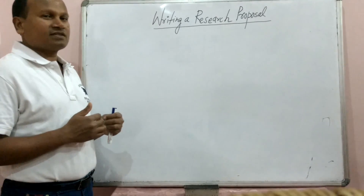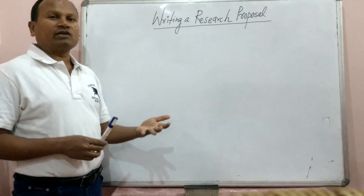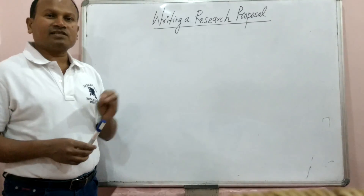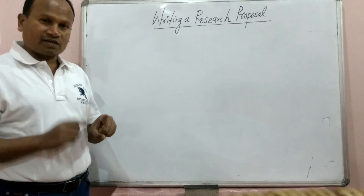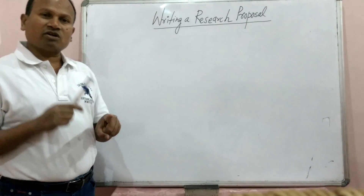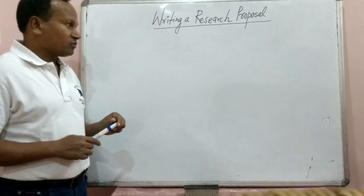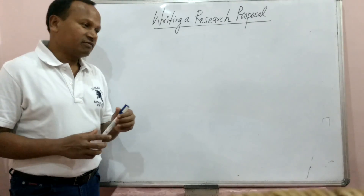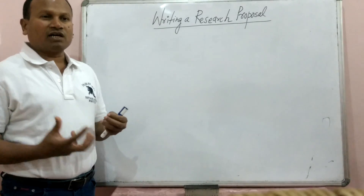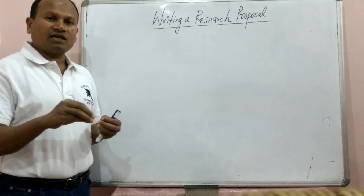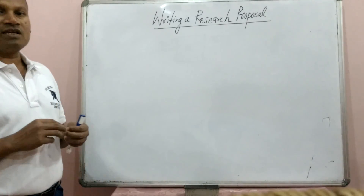We need to understand what is the process, how we can write a research proposal. When we are interested to apply for a research grant to a certain agency, we need to write a research proposal. The research proposal is written for a research grant, and some sort of research proposal which we call a synopsis or summary of the research, we write for a PhD program also. Here we are talking about a research proposal for a research grant — we want a grant to conduct research on a suitable topic in a certain area, in a certain discipline of science, engineering, or technology.